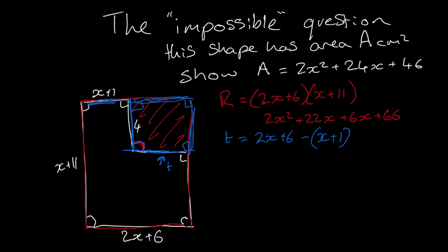However you need to put this one in brackets because of the minus in front of this. So this becomes when you calculate out x plus 5. So 2x minus an x gives you an x. 6 minus a 1 gives you 5.